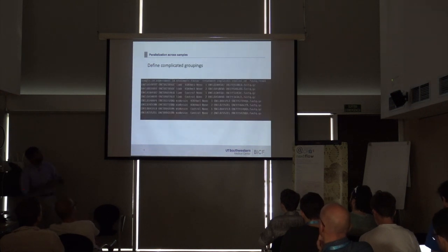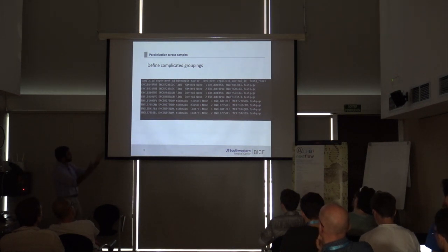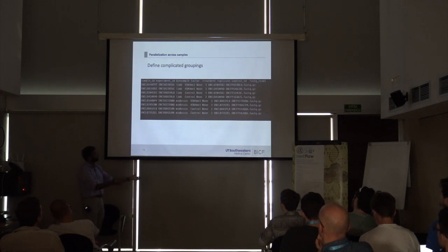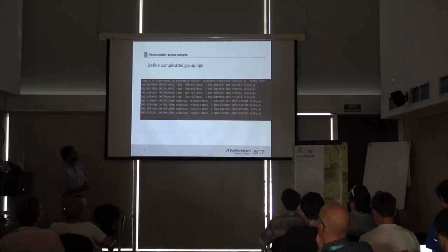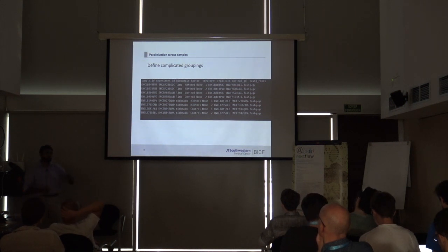We created complex grouping structures with sample IDs, experiments, biological sample factors, treatments, replicates, controls, and FASTQ files. We did all the complicated grouping to catch comparison errors early — for example, if someone defined the same replicate number twice or duplicated file names, we'd throw those errors very early in the process.